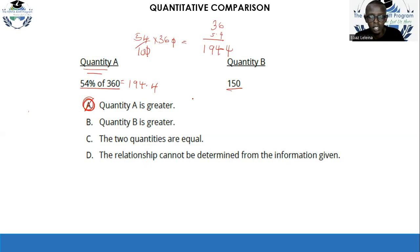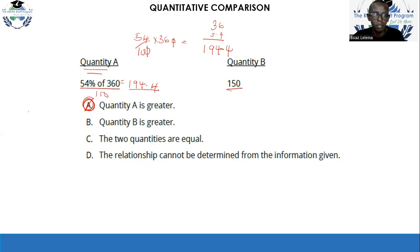If both quantities had turned out to be 150, you would have selected option C, meaning the quantities are equal. But because we found quantity A is 194.4 — greater than 150 — you go with quantity A.